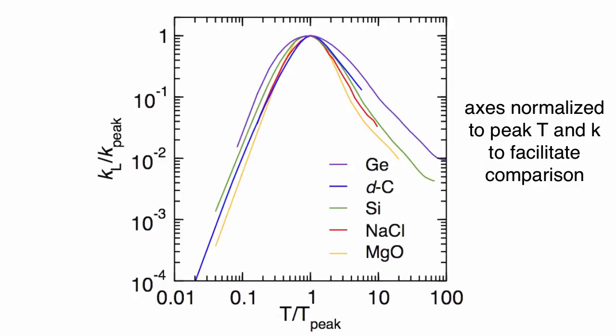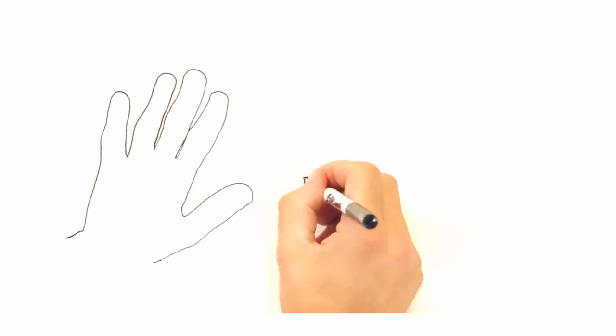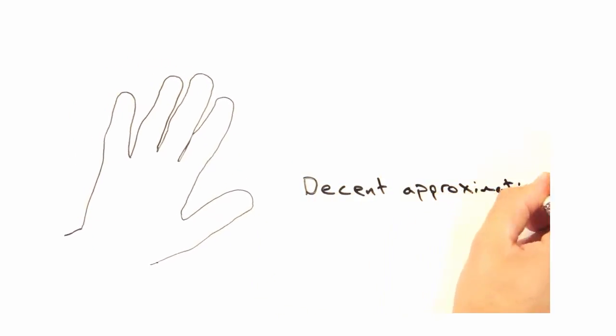Now what we've done for the axes is normalize them. So we've normalized the temperature in terms of the temperature at which the thermal conductivity peaks, and we've normalized the magnitude of the thermal conductivity in terms of the magnitude of that peak point. So while it may seem that we've done a lot of hand-waving in the last few videos, what we've done turns out to be a pretty decent approximation for reality, and really that's all that matters.